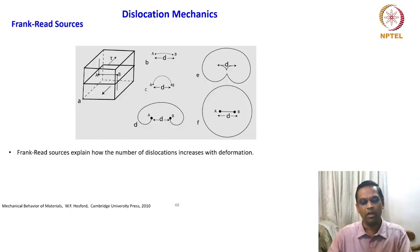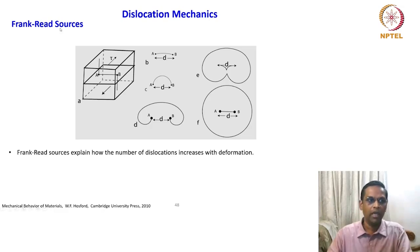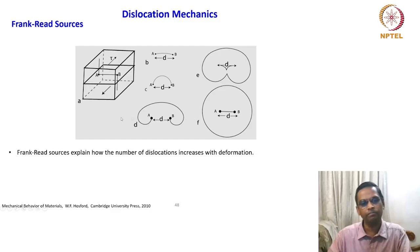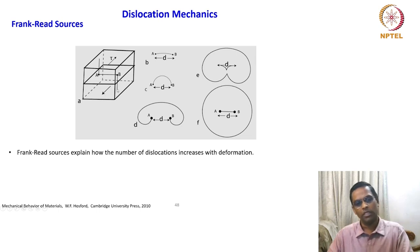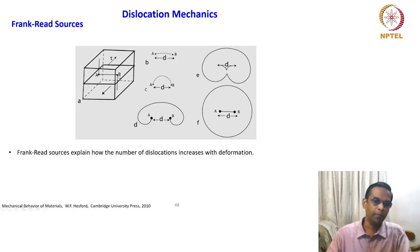One of the important primary mechanisms by which dislocation multiplies in the crystal system is popularly known as the Frank-Reed source. What is this Frank-Reed source? Look at the schematic here. This is a perfect crystal. You are looking at the slip plane in the middle of this crystal with the dislocation line AB, and the shear stress is supplied in this direction, so the top and bottom are pulled in opposite directions.